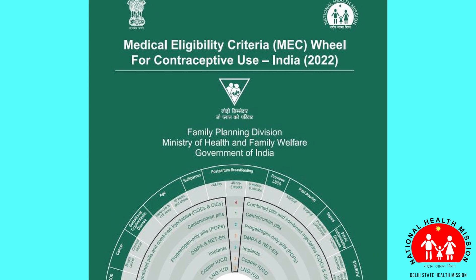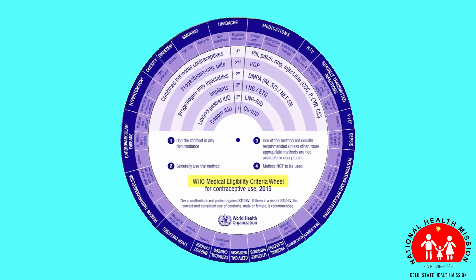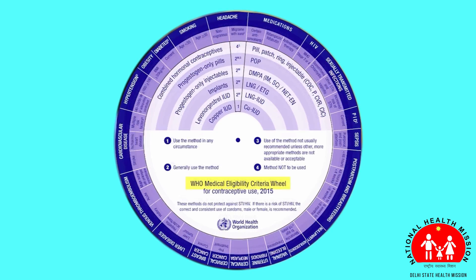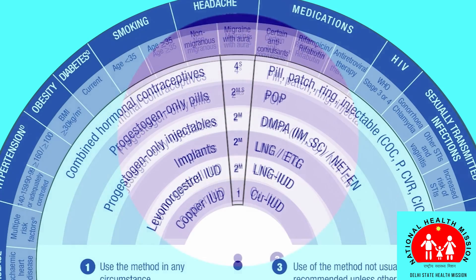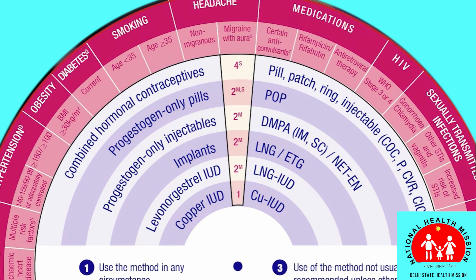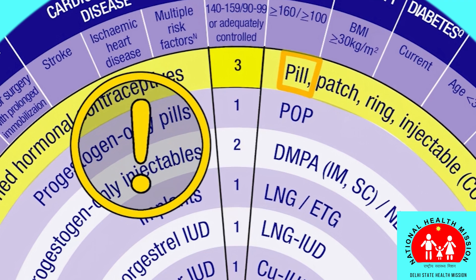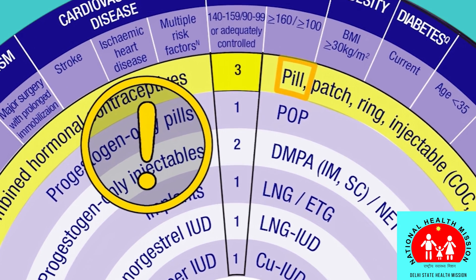Remember, the MEC wheel is a quick and easy way to look up the safety of contraceptive methods. Find the contraceptive method on the inner wheel and the woman's medical condition on the outer wheel. A 1 or 2 indicates the method is safe to use, and a 3 or 4 indicates that the method is unsafe.